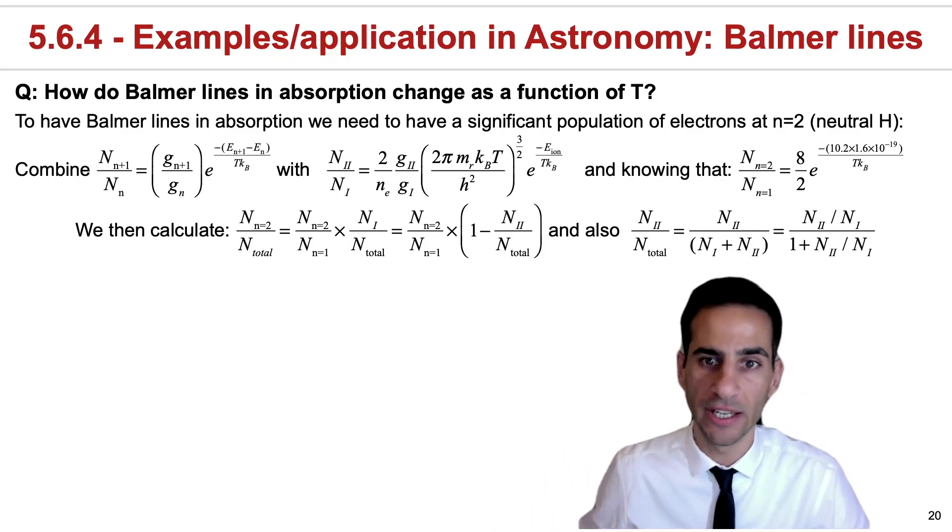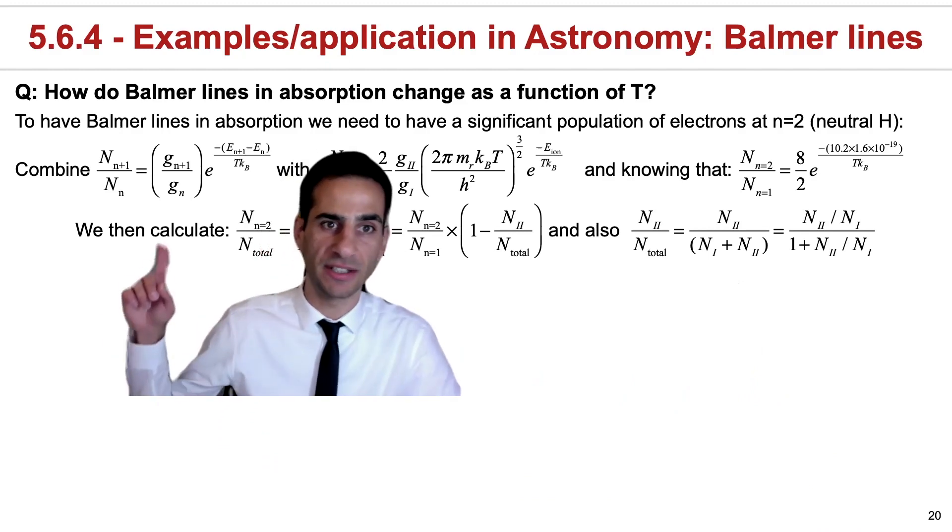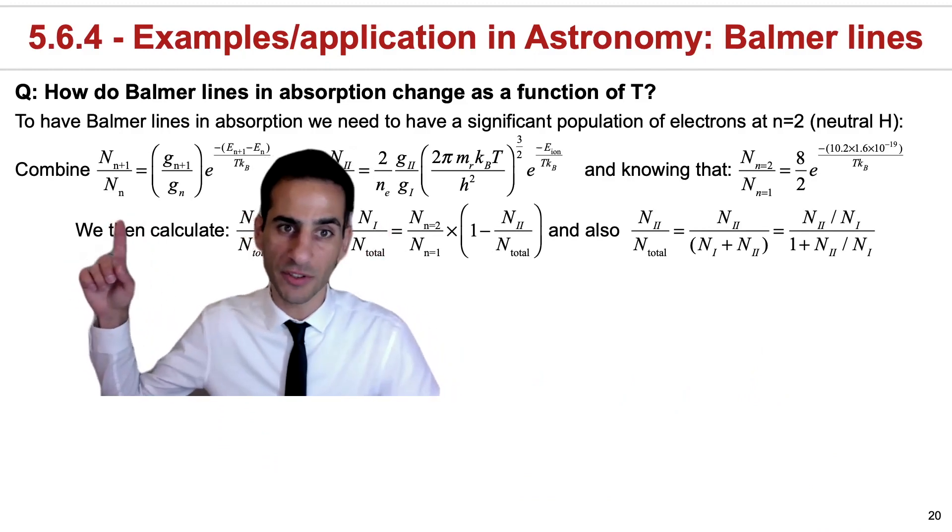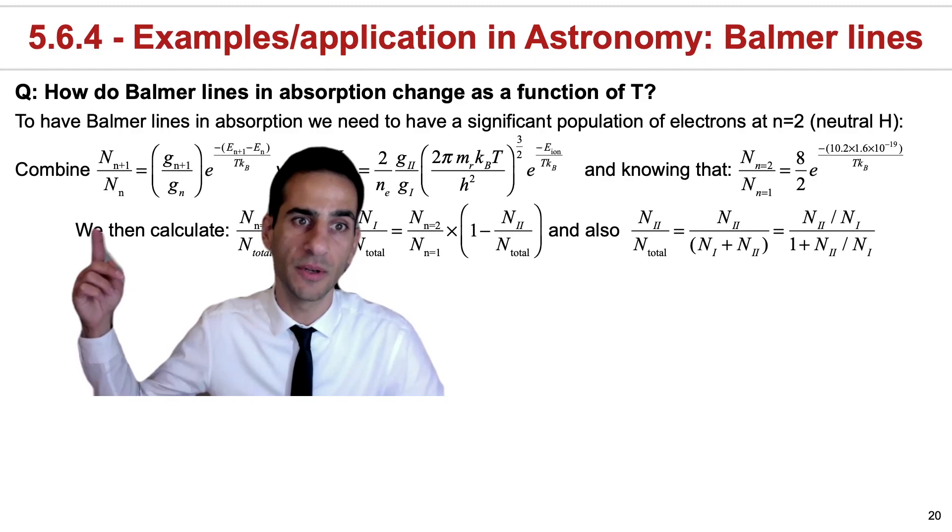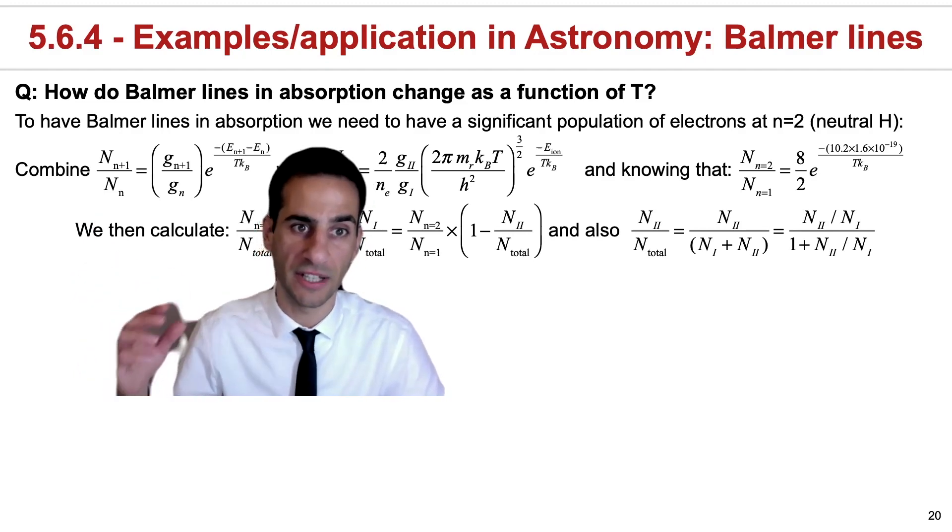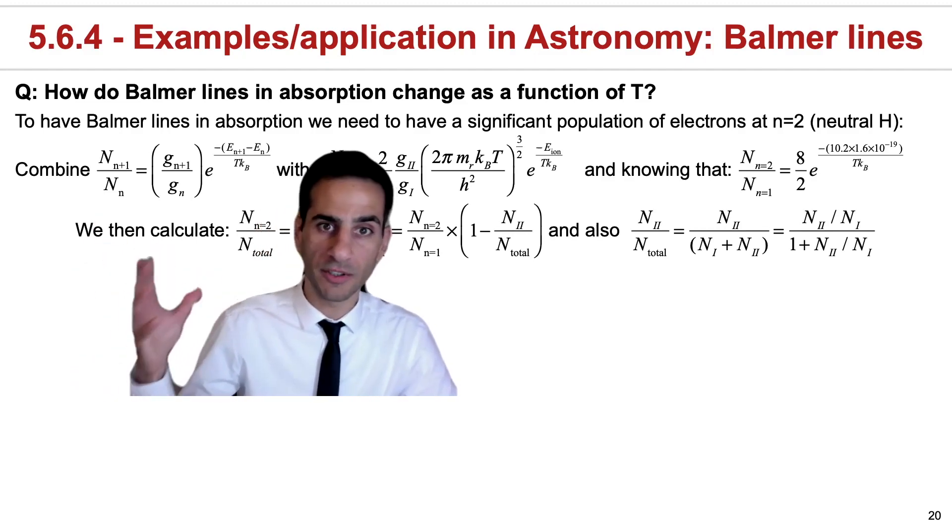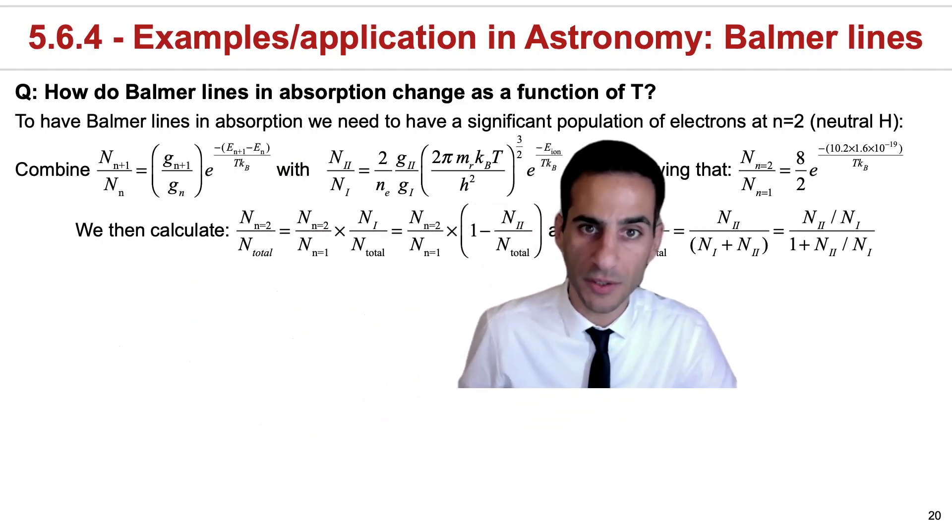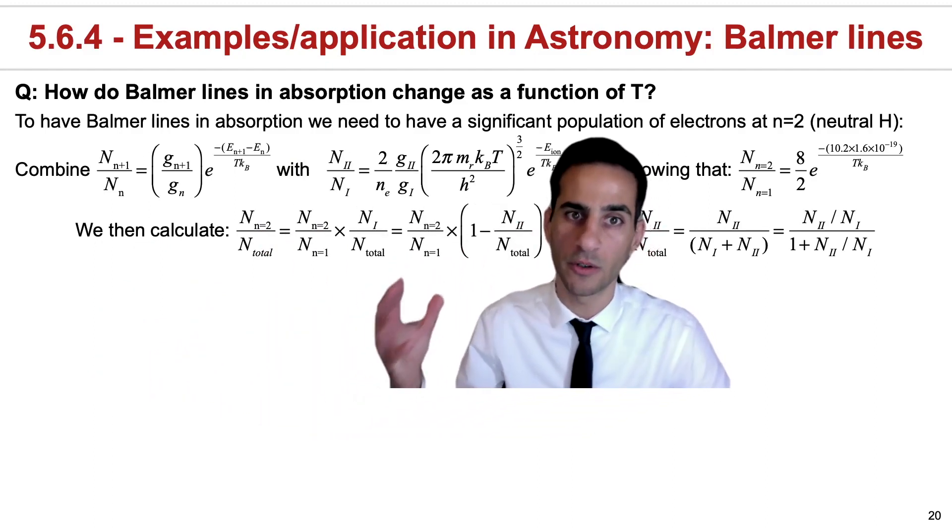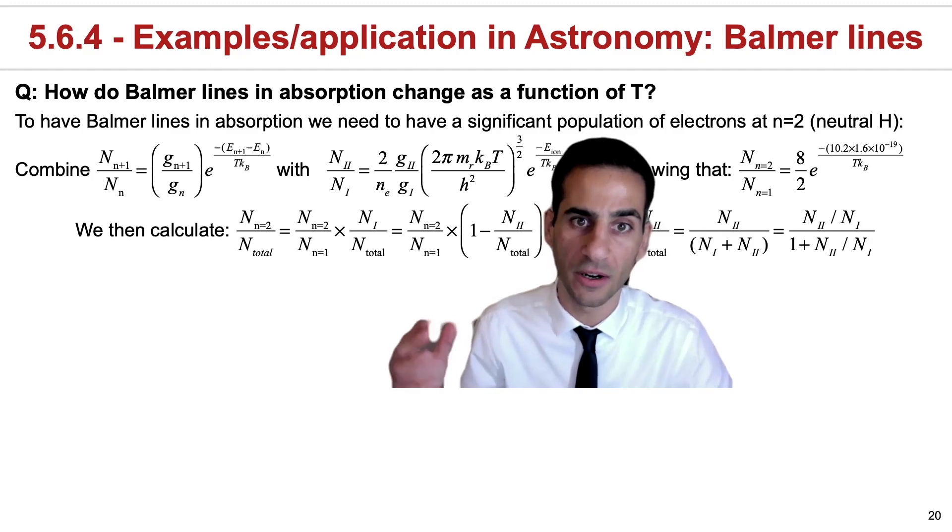What we want, therefore, is to calculate essentially the number of atoms at n equals 2, where electrons are at n equals 2, versus the atoms that have electrons at n equals 1. For that, we use the Boltzmann equation, and also we want to make sure that we're only looking at atoms that are neutral.